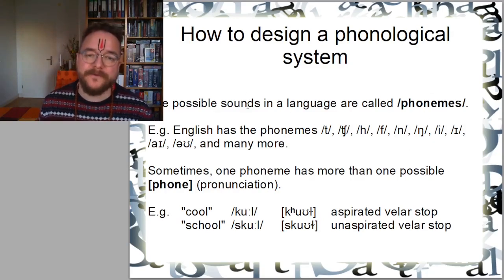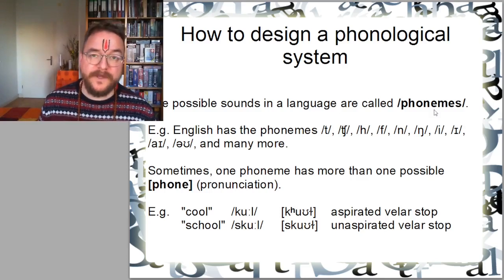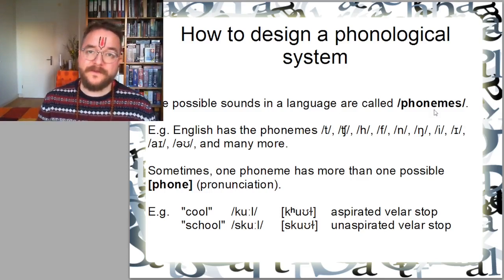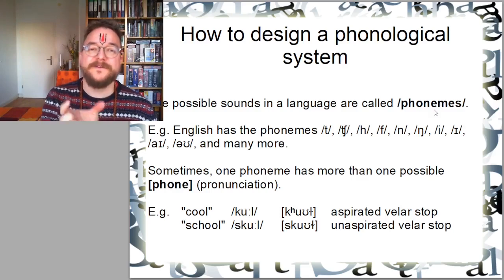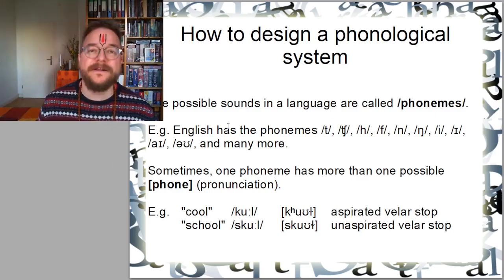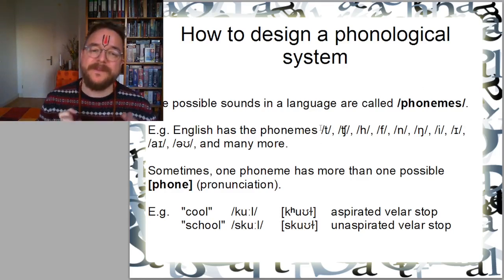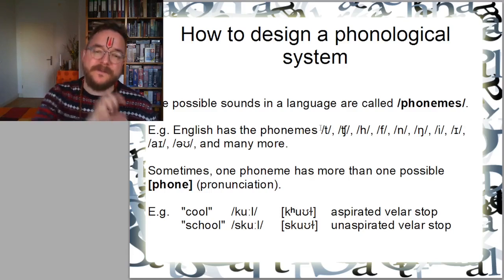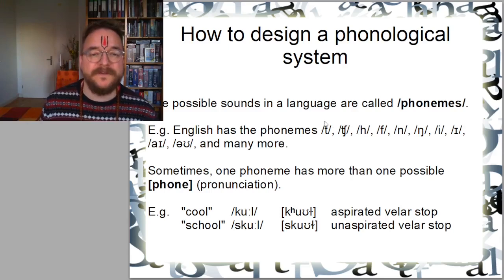All the possible sounds in a language that are distinguishable are called phonemes. That comes from ancient Greek. Phonos means sound and a phoneme is a piece of sound in a language. For example, English has those phonemes here. You see they are always written within brackets. That means they are phonemes, they are distinguishable elements in the language.